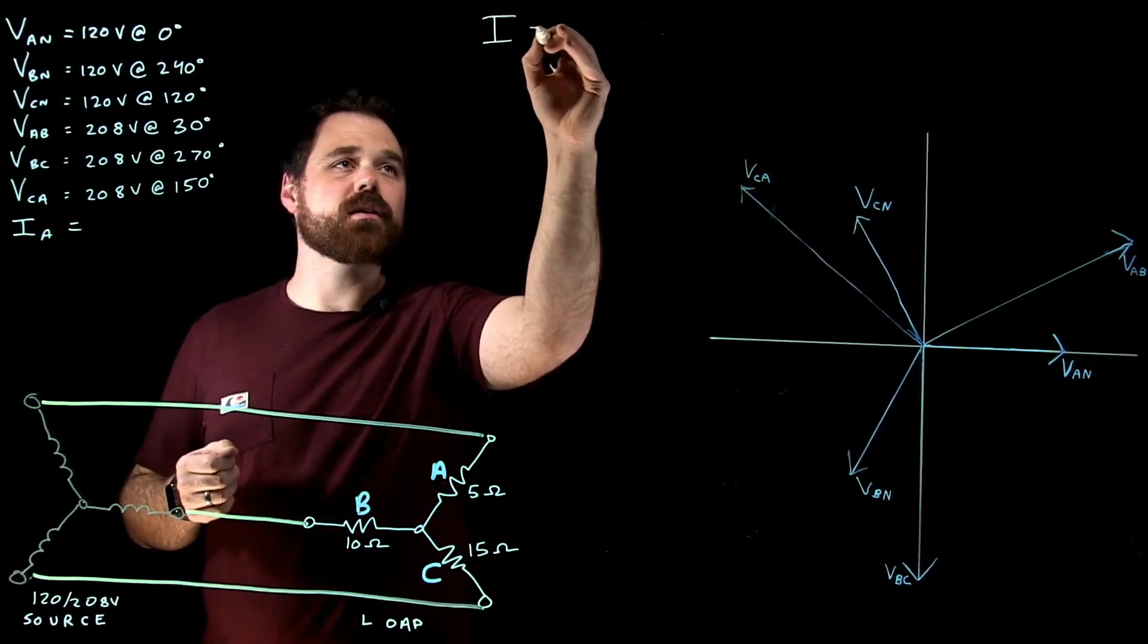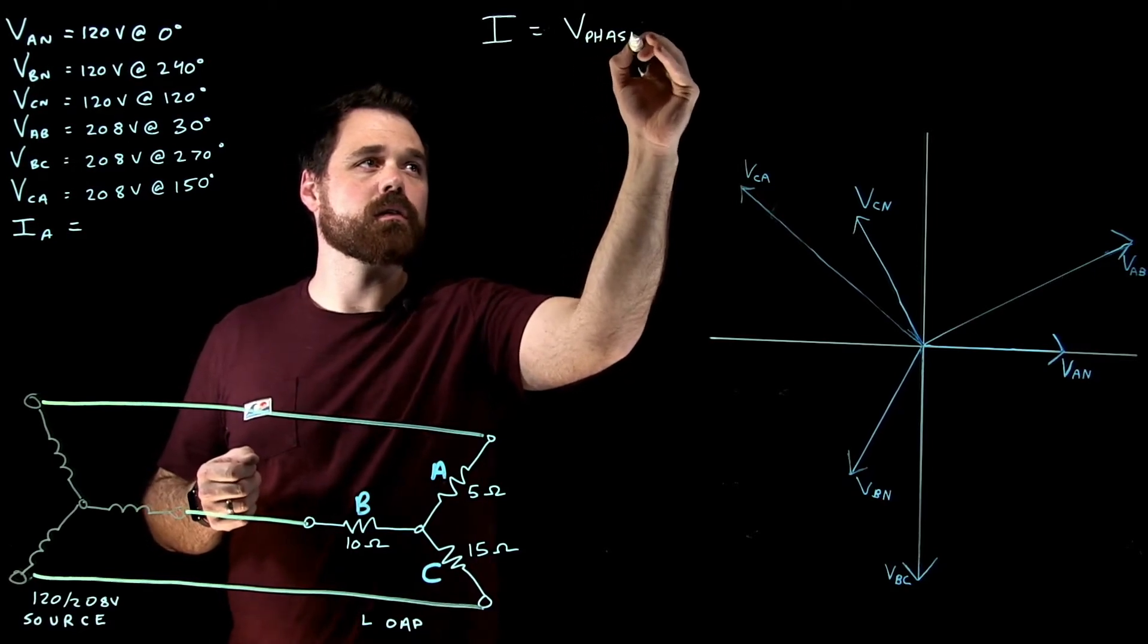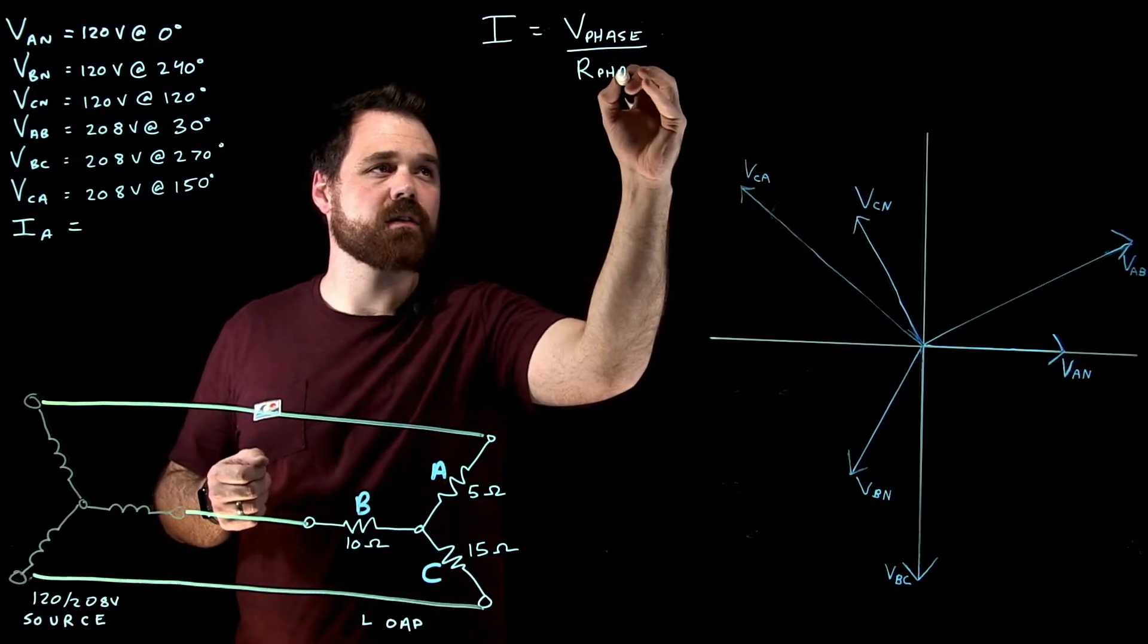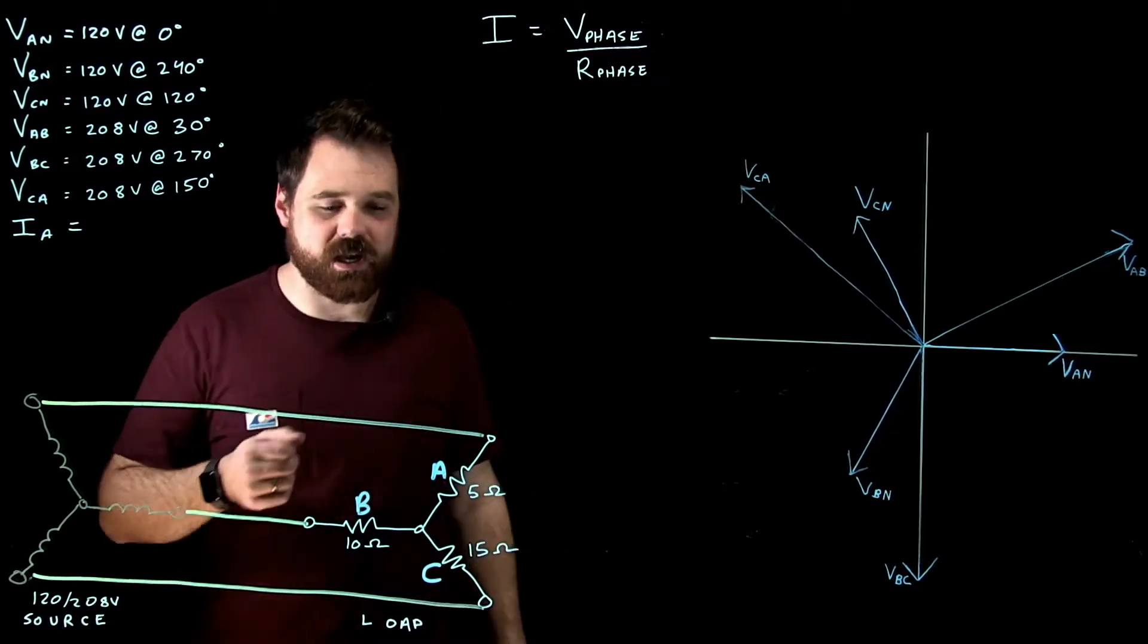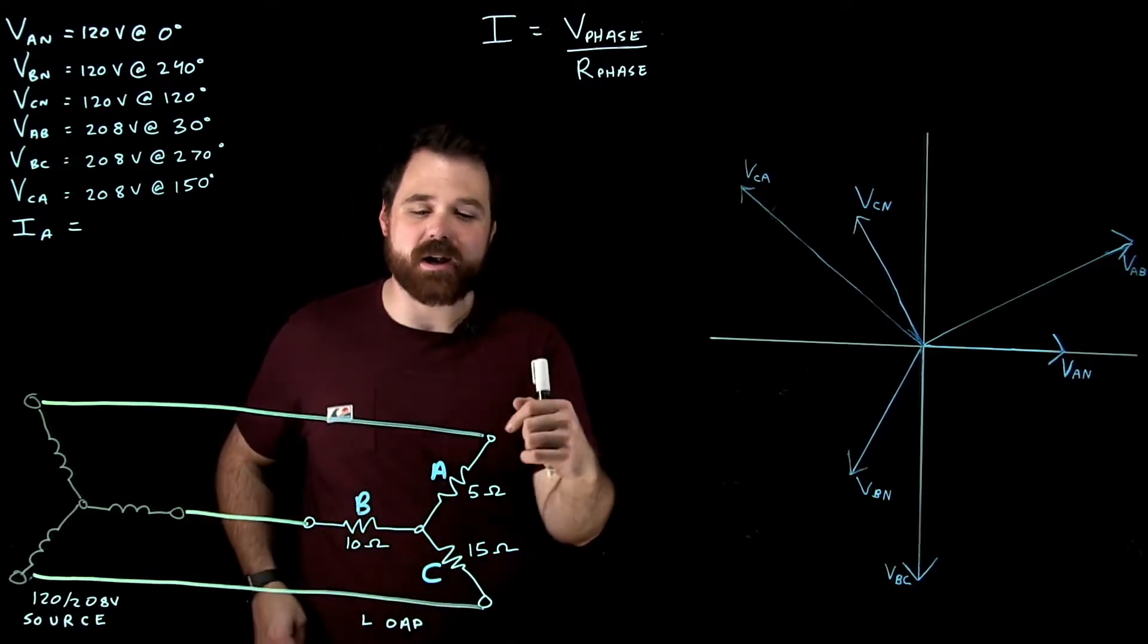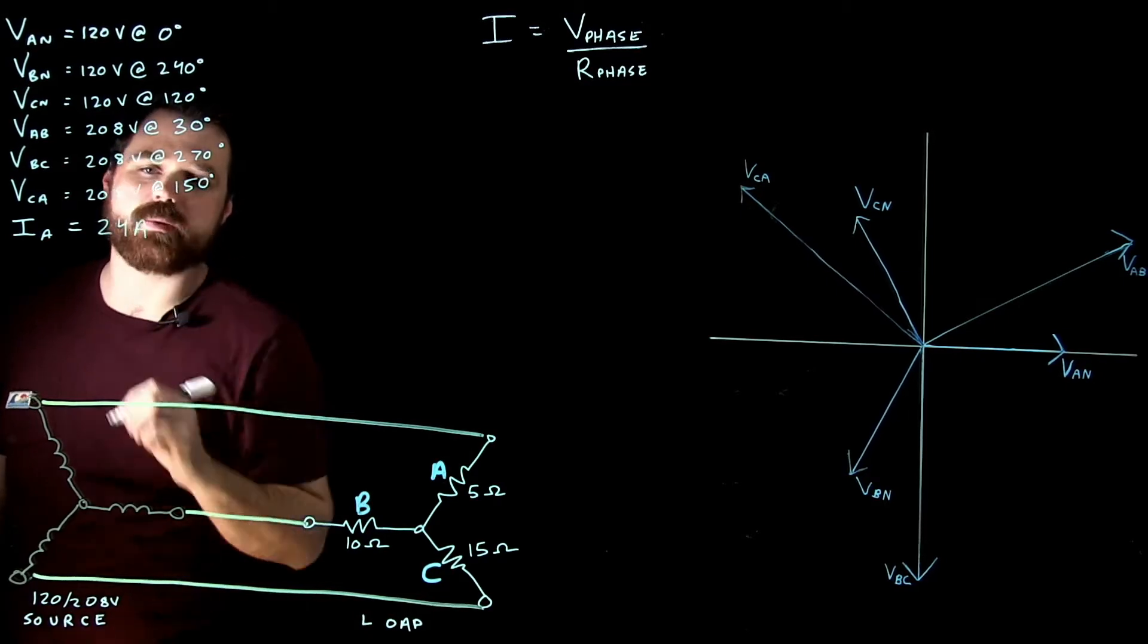I equals the phase voltage divided by the resistance in the phase. So in this case, I'm going to go 120 volts. That's my phase voltage divided by 5 ohms. And that's going to give me 24 amps.